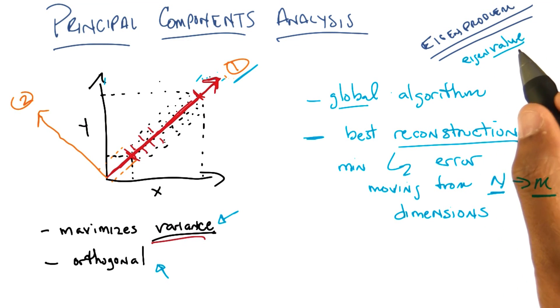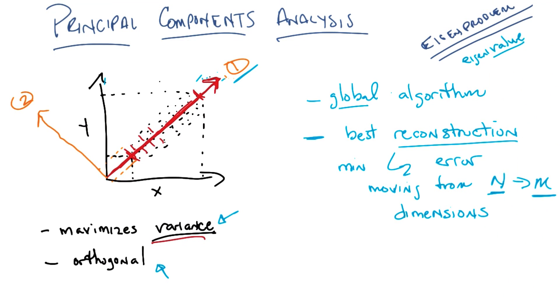So let me see if I can echo some of that back. It's almost as if what we're doing here is a transformation into a new space where feature selection can work.